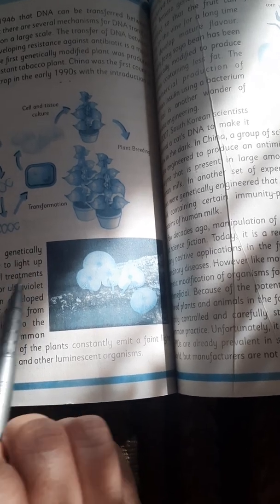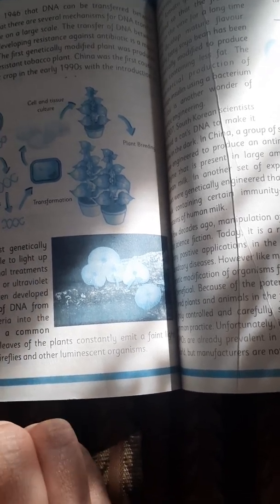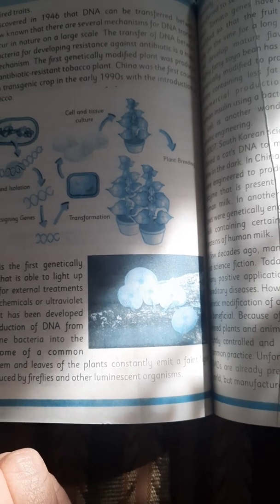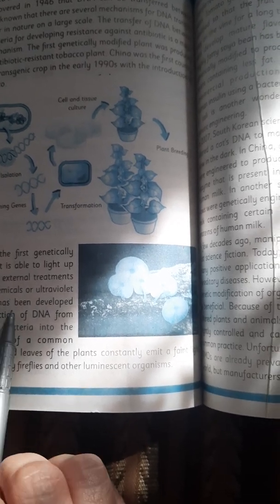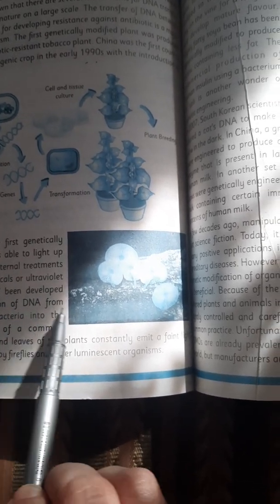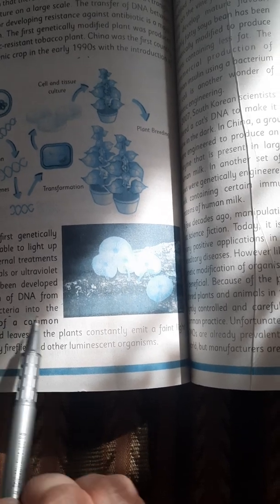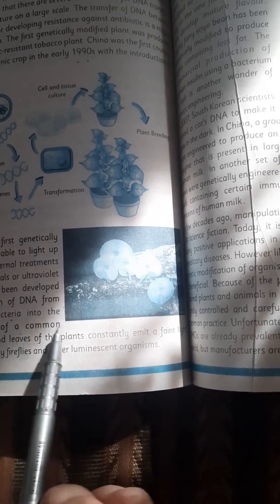Starlight Avatar is the first genetically engineered plant that is able to light up without the need for external treatments or stimuli such as chemicals or ultraviolet light. The plant has been developed through the introduction of DNA from luminescent marine bacteria into the chloroplast genome of a common house plant.